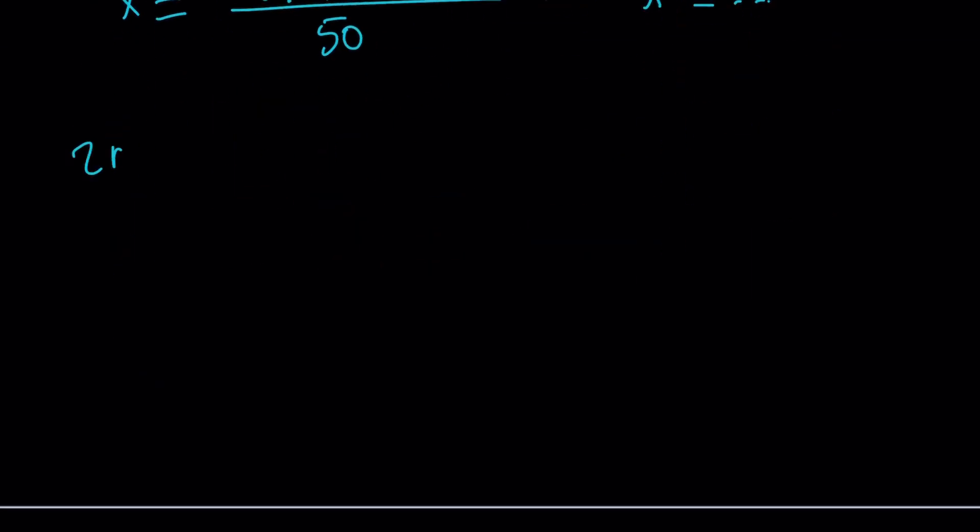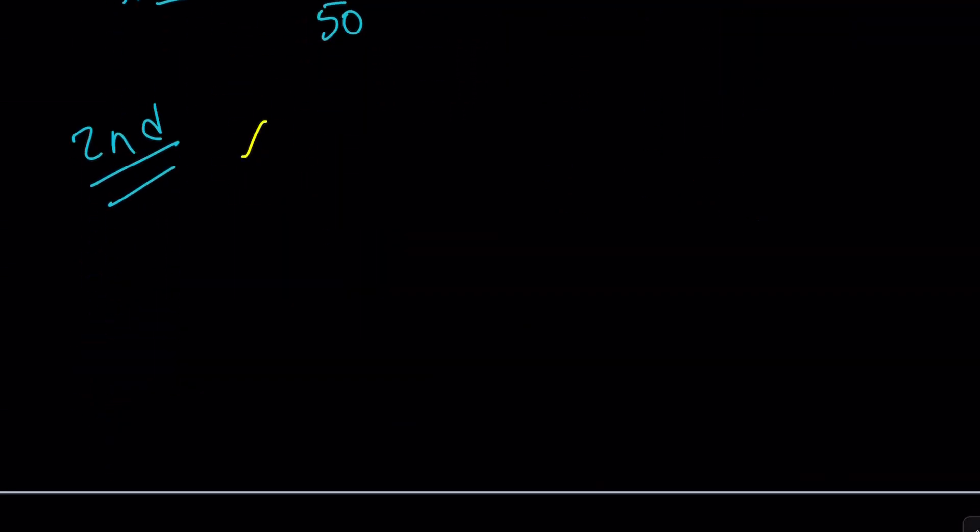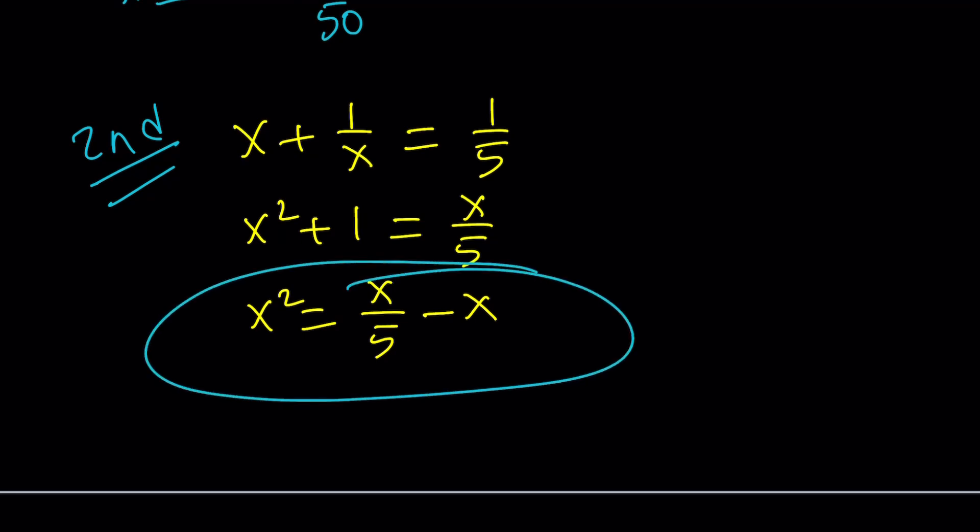Okay, so what about the second method? The second method is going to depend on kind of like a manipulation of this as a polynomial. We are given x plus 1 over x equals 1 over 5. Let's go ahead and do the following. Try to isolate x squared. Write x squared in terms of x. Multiply everything by x. And then subtract 1. So we kind of linearized x squared, as you can see here. And hopefully this is something we can use.